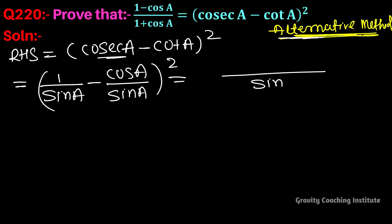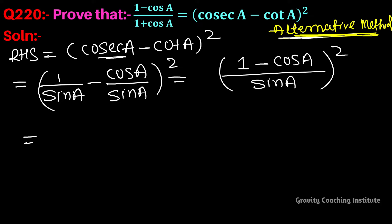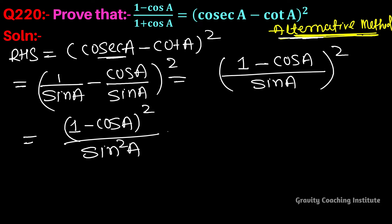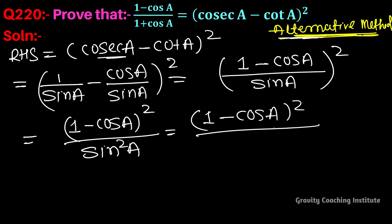We take the LCM, which is sin A since both denominators are identical, so the numerators remain as-is. This gives [(1 - cos A)/sin A]². Separating the square, we get (1 - cos A)² / sin²A.